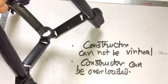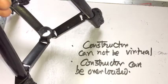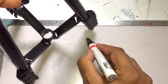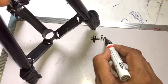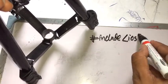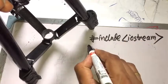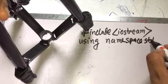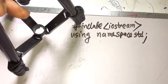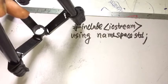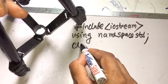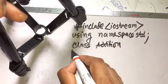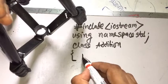Now the example. We include iostream, using namespace std. The class name is — suppose — 'addition'. This is the body of the class. We know the class consists of private and public sections.